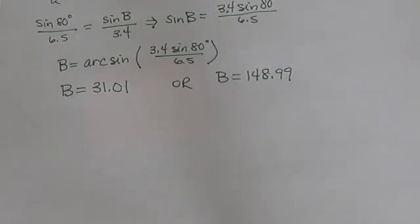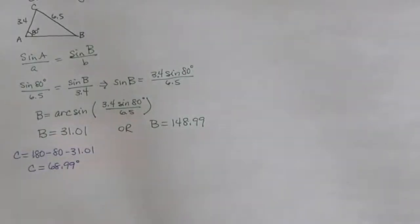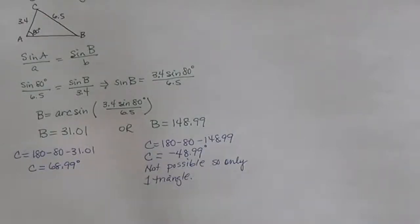To see if both triangles actually exist, we need to go further. Looking at angle C: with angle A and angle B known, we subtract to find angle C. For the first triangle, when B equals 31.01 degrees, C equals 68.99 degrees — three acute angles, which is certainly valid. For the other triangle, if B equals 148.99 degrees, then C would equal negative 48.99 degrees, which is not possible. So there is only one triangle: A is 80 degrees, B is 31.01, and C is 68.99.